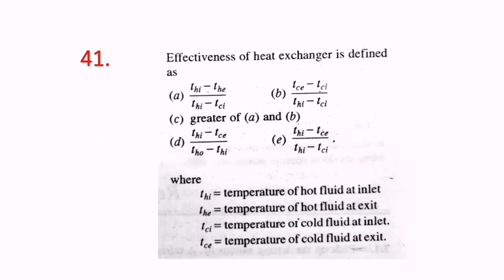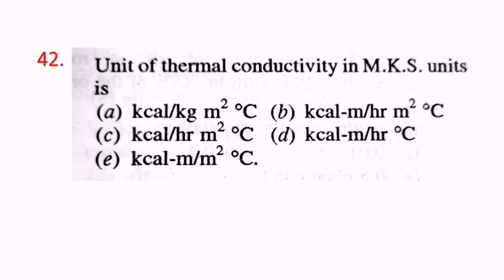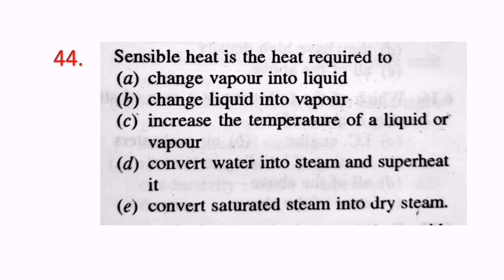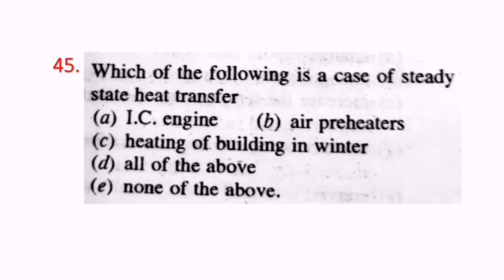Question 41: Effectiveness of a heat exchanger — C is the correct answer. Question 42: Unit of thermal conductivity in MKS units is kilocalories per meter per hour per meter squared per degree Celsius. B is the correct answer. Question 43: Thermal conductivity of solid metals with rise in temperature normally decreases. Question 44: Sensible heat is the heat required to increase the temperature of a liquid or vapor. C is the correct answer. Question 45: Which of the following is a case of steady state heat transfer? None of the above. E is the correct answer.